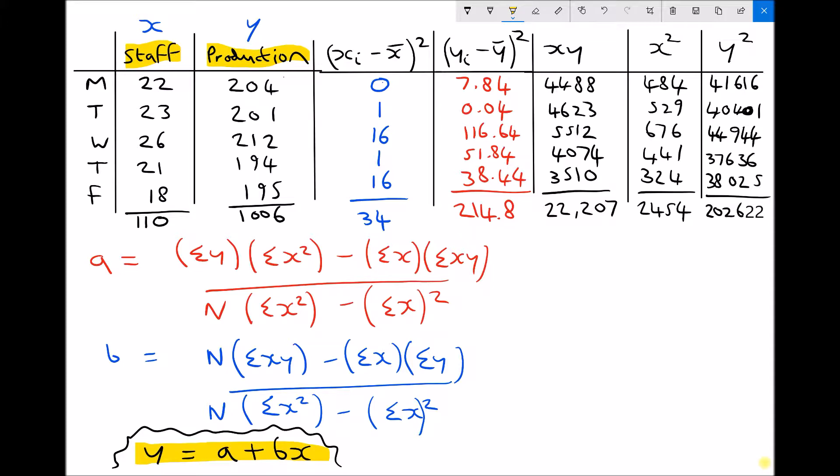Let's first calculate a and b. When calculating these values, the first thing to observe is that the denominator, or the number on the bottom of each fraction, is going to be exactly the same because the formula on the bottom is identical. This means we only have to do the calculation once.